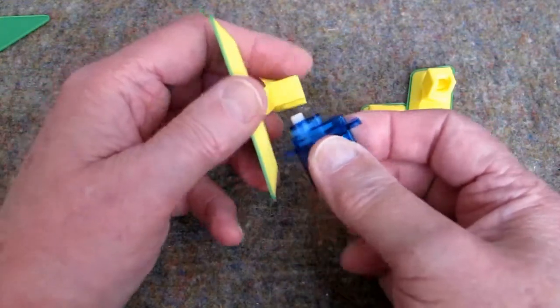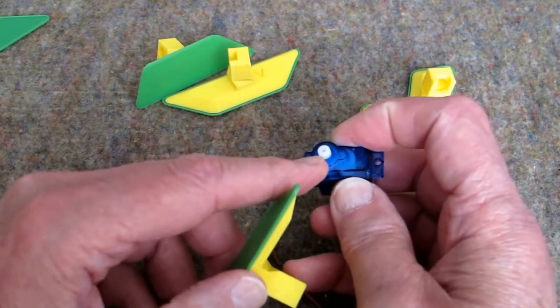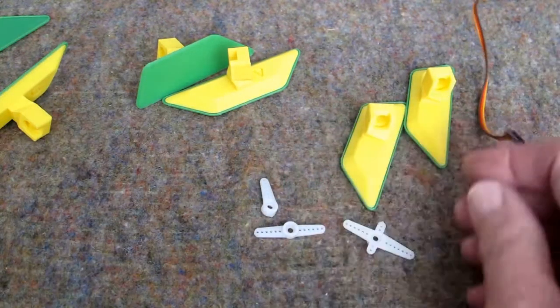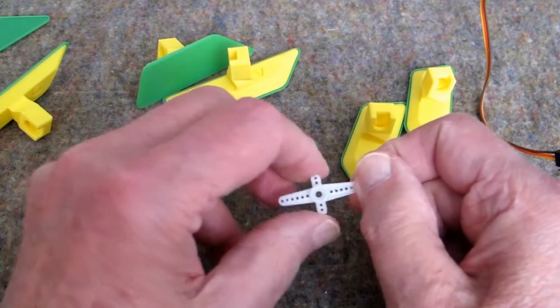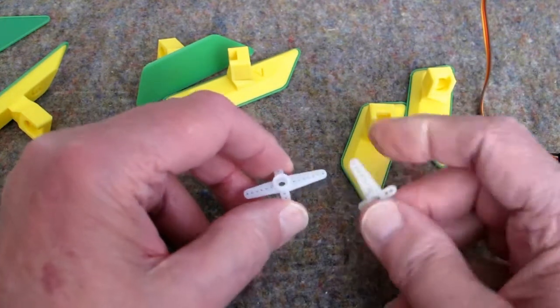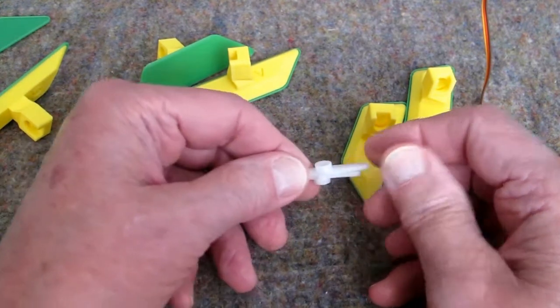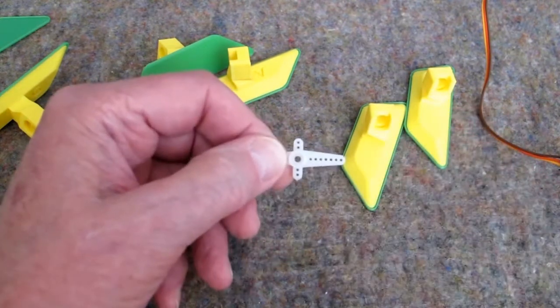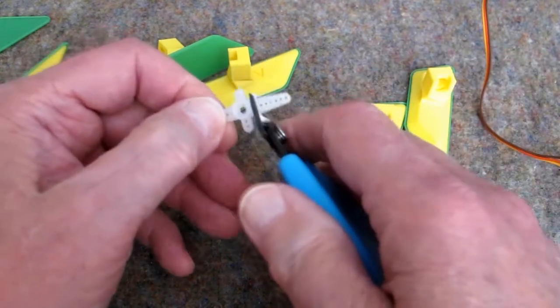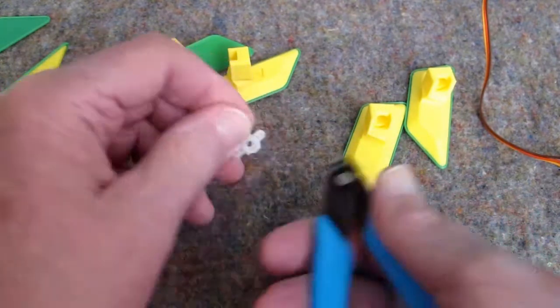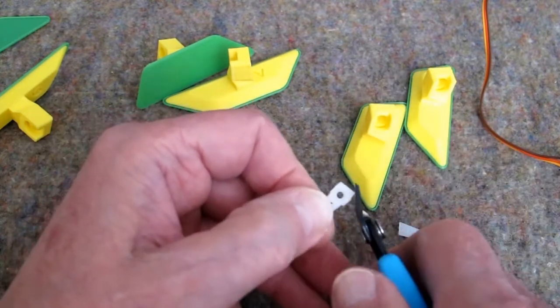And then each segment is going to go on one of these SG90 servos. So we need a way of attaching this to the splined output of the servo. Each servo comes with three of these horns. I don't have any use for these particular horns, mainly because they are not symmetric. If I put one on top of the other, I can see that the bottom horn is longer on this end and the top horn is longer on this end. I'm going to cut off the long end and each of these side tabs. You need to wear safety glasses when you're doing this. These will ricochet around. I'll be sweeping up bits and pieces of this for the foreseeable future.